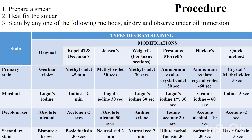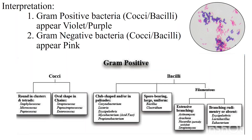The fourth step is counterstaining, which is also a basic dye that stains the previously unstained organisms. By this we can adapt different methods of Gram staining. The basic procedure starts with preparing a smear and heat-fixing it, which I have already explained in the simple staining procedure.